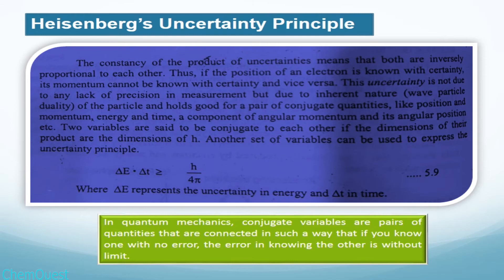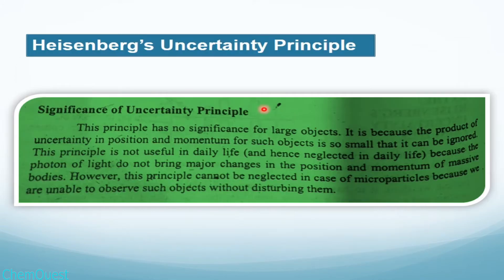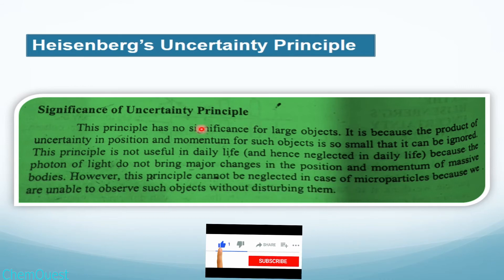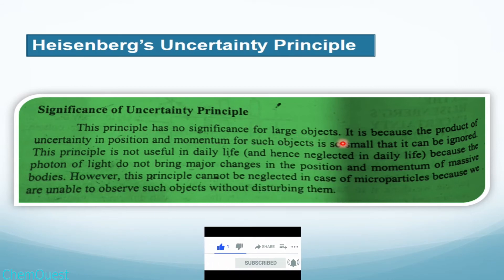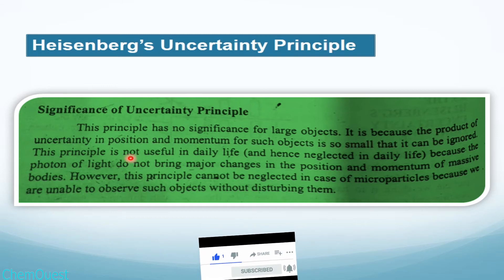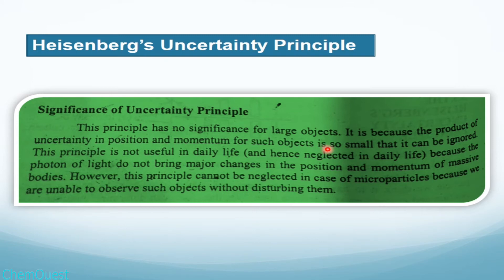What is the significance of Heisenberg's Uncertainty Principle? This principle has no significance for large objects. As we discussed in the first slide, for large or classical mechanical or macroscopic particles, we can easily determine their position and momentum simultaneously. The product of uncertainty in position and momentum for such objects is so small that it can be ignored.